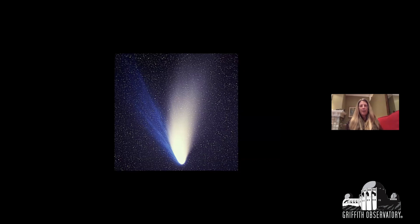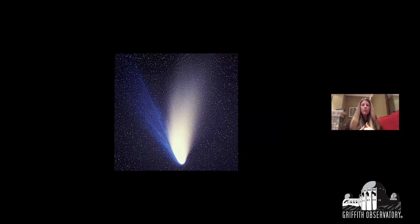This is Comet Hale-Bopp — a quintessential beautiful picture of a comet. The basic components of a comet are the nucleus, which is just a teeny tiny little thing right down in the core. Around the nucleus is the coma, which is outgassing and travels with the comet. And then trailing behind the comet — or sometimes in front of the comet — is the tail.